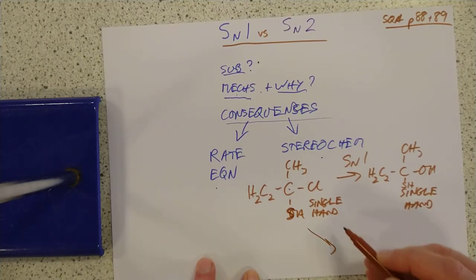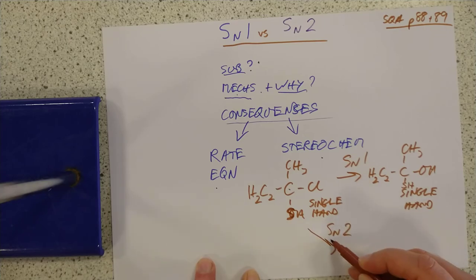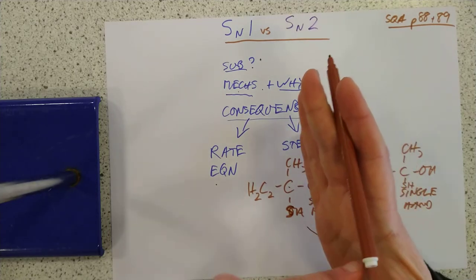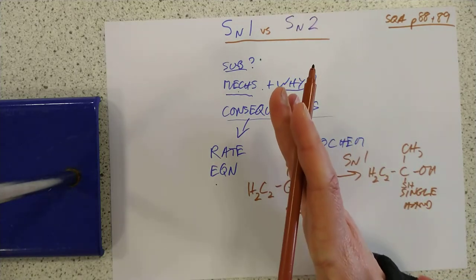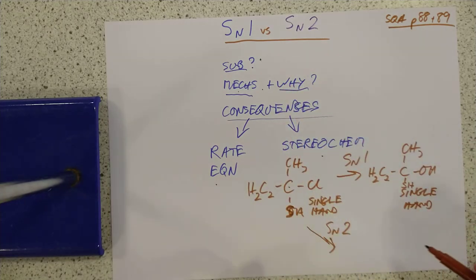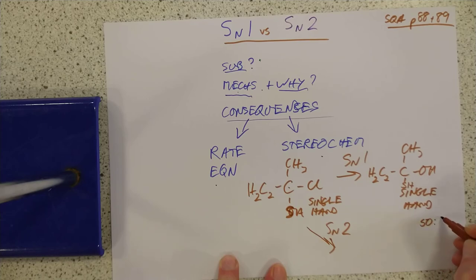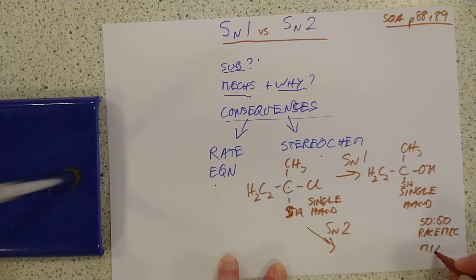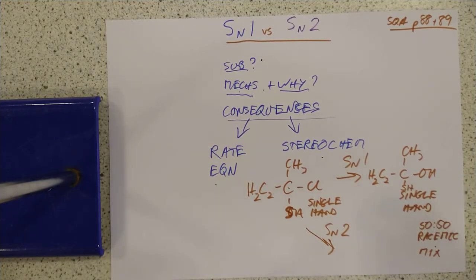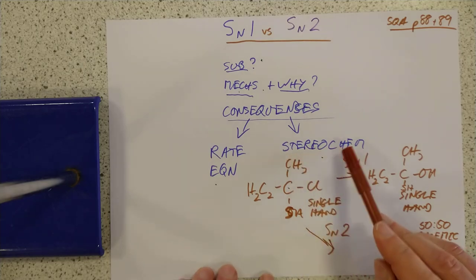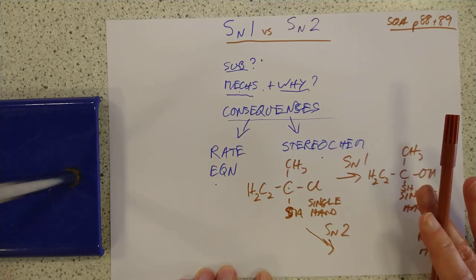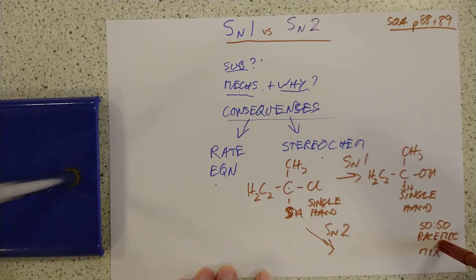If you did an SN1 reaction, the intermediate is not flat — it retains its three-dimensional structure. So if you start with a single enantiomer and go and look at the video on stereochemistry, you'll find you only make a single enantiomer of the product, which is great for medicines because medicines are affected by a chiral environment inside the body. SN1 reactions retain the optical activity. SN2 reactions, because of that flat two-dimensional intermediate, cause you to lose the optical activity, giving a racemic mixture.